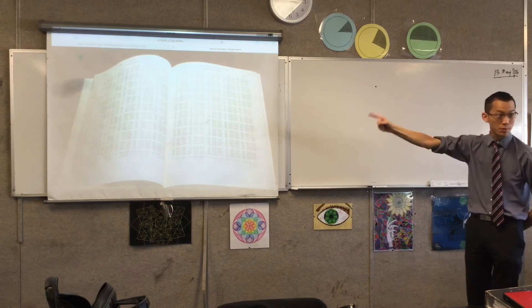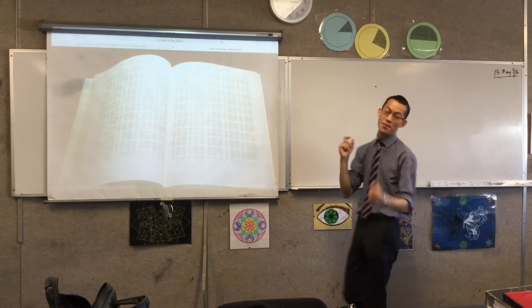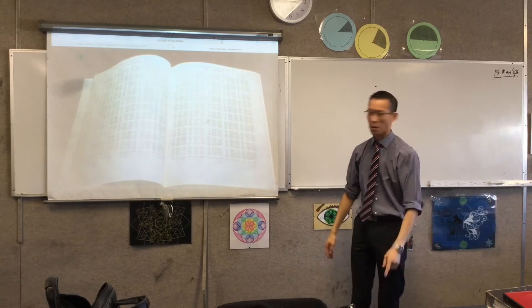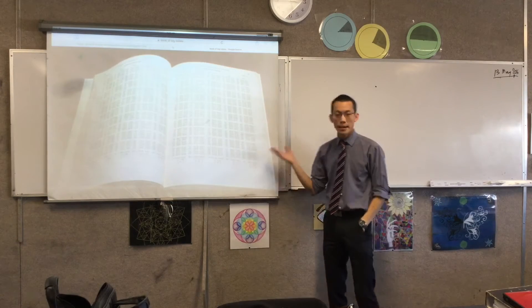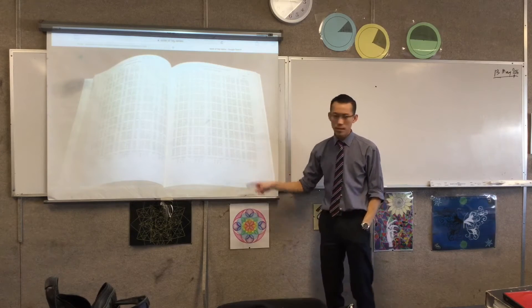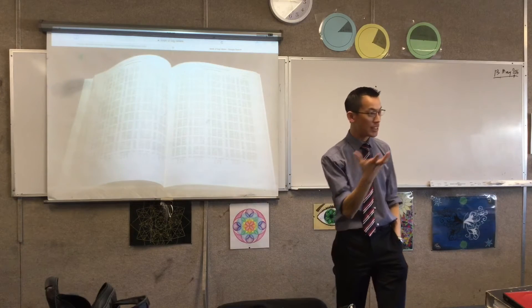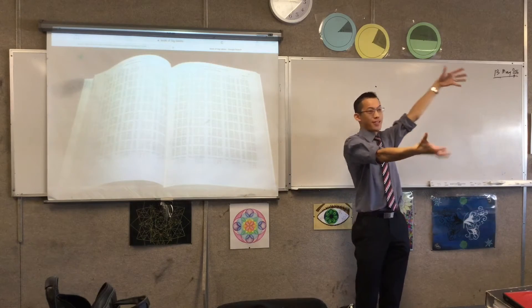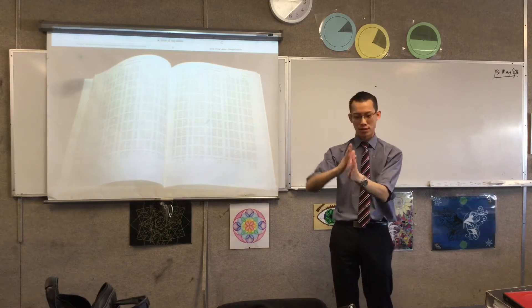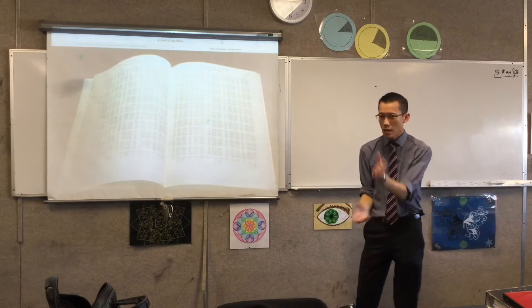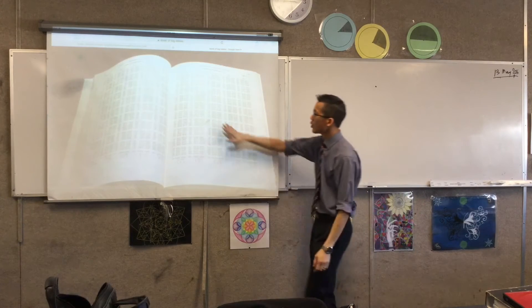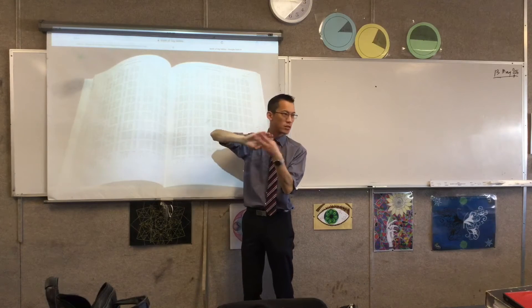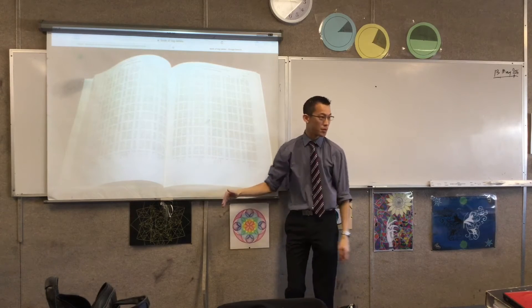This is a book — a really important historical book which I am so thankful that you and I don't need to know about. But I'm going to tell you about it anyway, because it's an interesting piece of trivia. It's called A Book of Log Tables. Before the days of scientific calculators, where you could just punch in log of whatever you want and get a decimal value, these books contained log base 10, base 2, whatever you want, of all the different numbers.